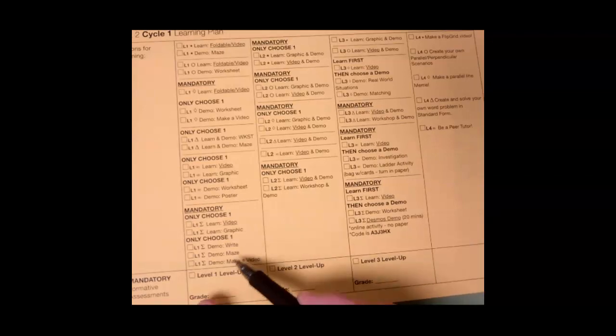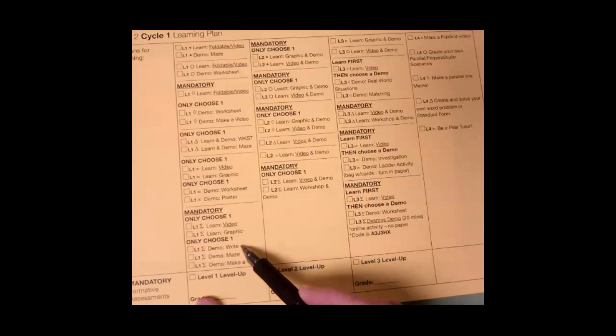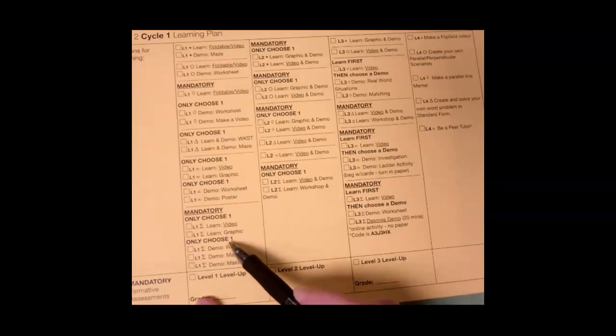Now that you have learned level 1 sigma, take out your learning plan and make sure you pick a demonstrate activity. You've just done this video, so now you need to do either a writing activity, a maze, or you can make a video. You have three options to demonstrate your learning — you only have to choose one. Good luck.